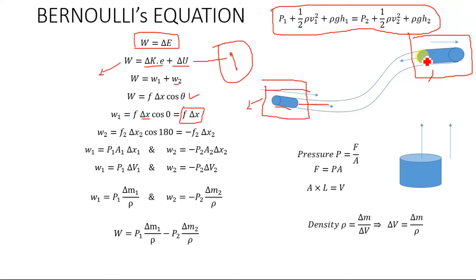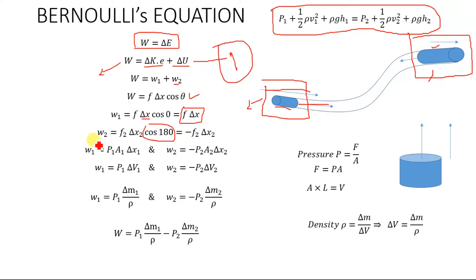At the second endpoint, the normal to the area points inward while the fluid flows outward, so θ equals 180 degrees. Since cos(180°) equals minus one, the work done at the second end is W2 equals minus F2·Δx2.